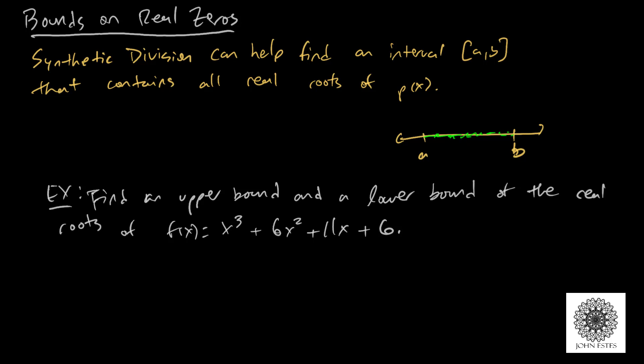What we mean by an upper bound is a number like this b. It could be that you find something out here. That still works, right? Because all the real roots are still in between a and this new value, we'll call it c.